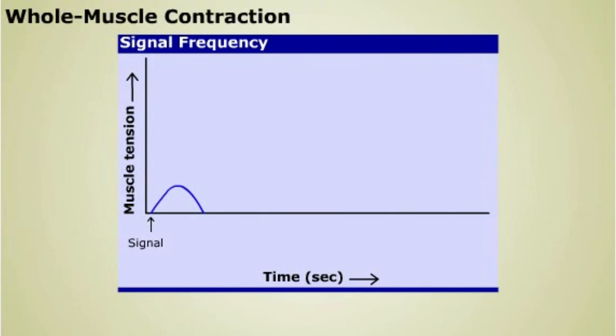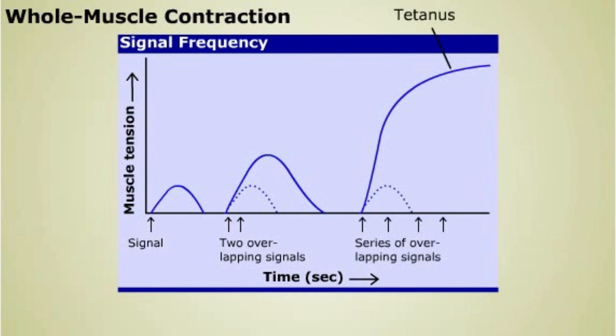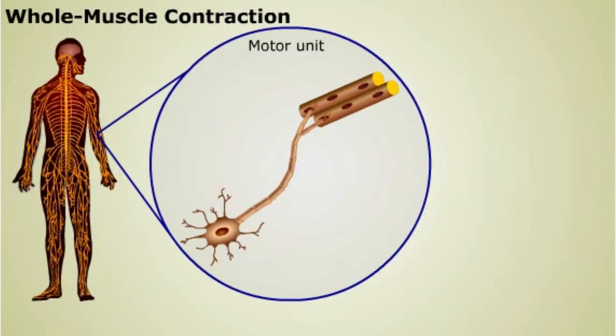The frequency of the signals from the motor neuron regulates the strength and length of the whole muscle contraction. When a second signal arrives before the first response finishes, the signals are added together. Many overlapping signals produce one sustained contraction called tetanus.